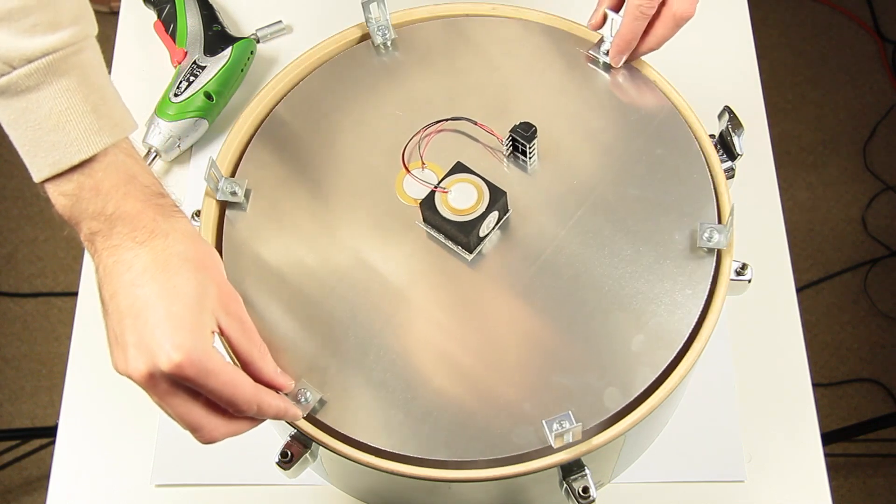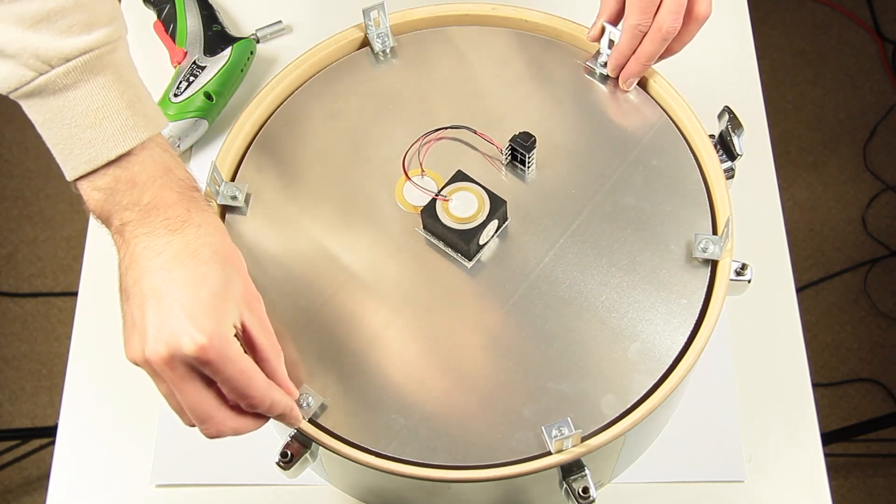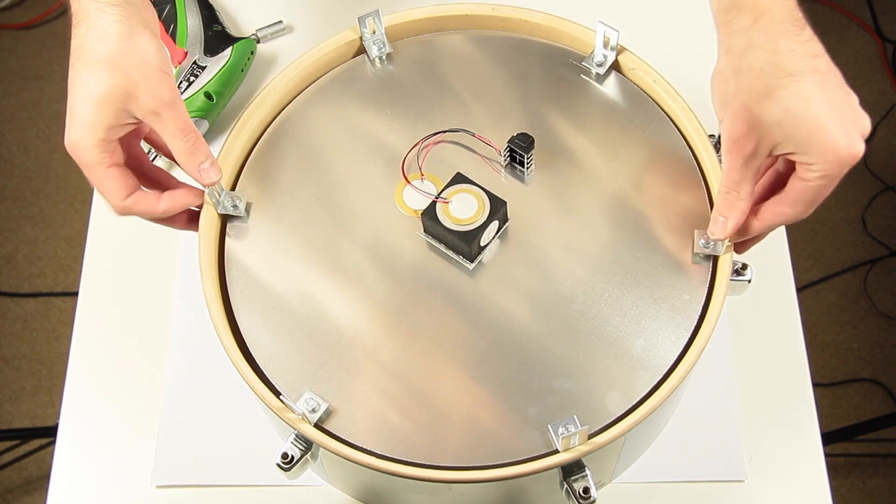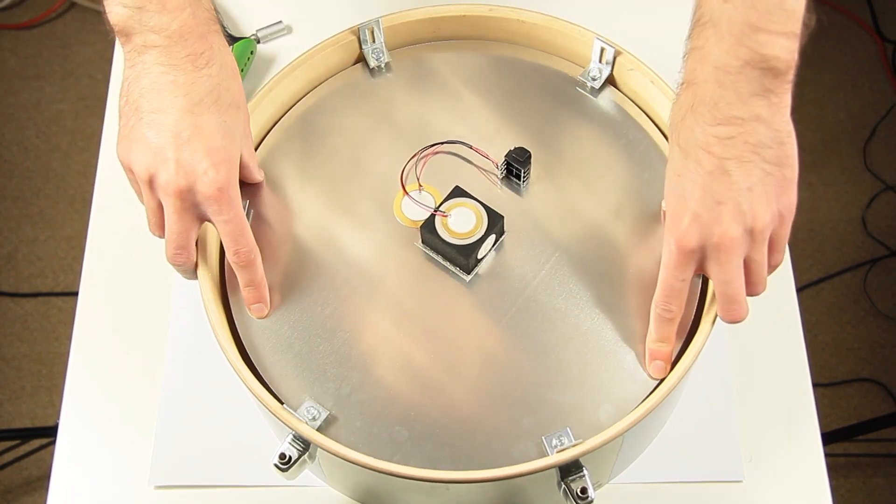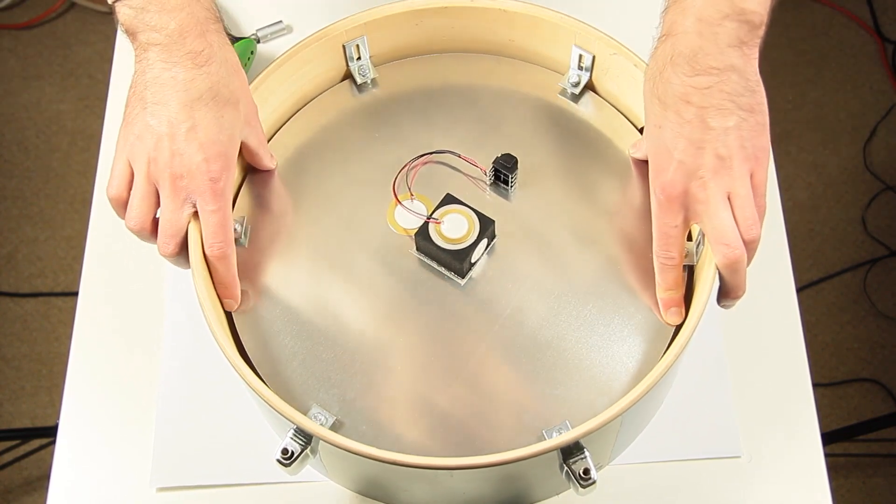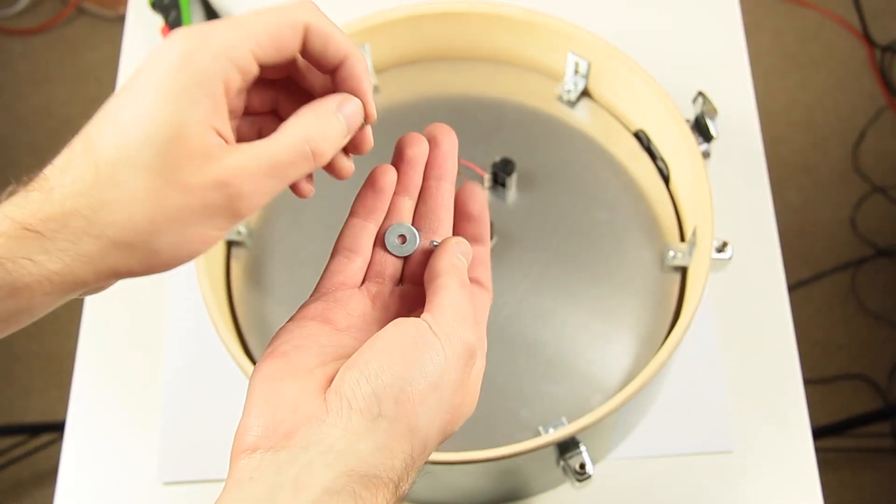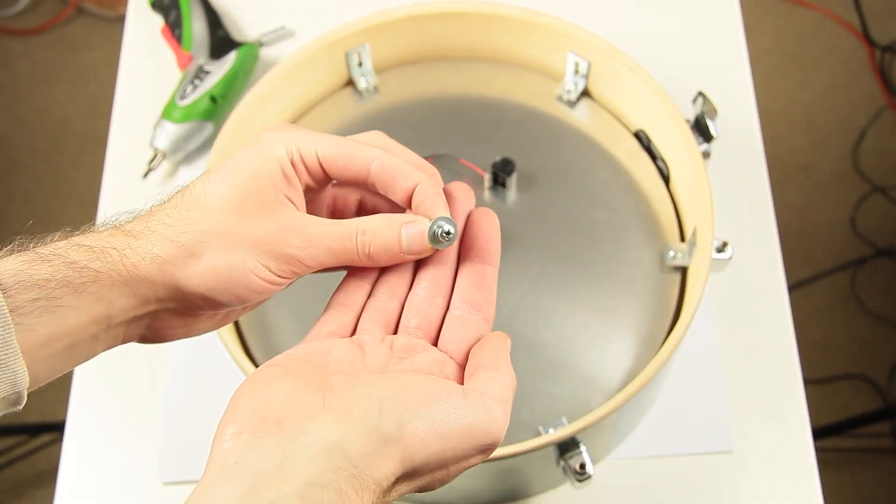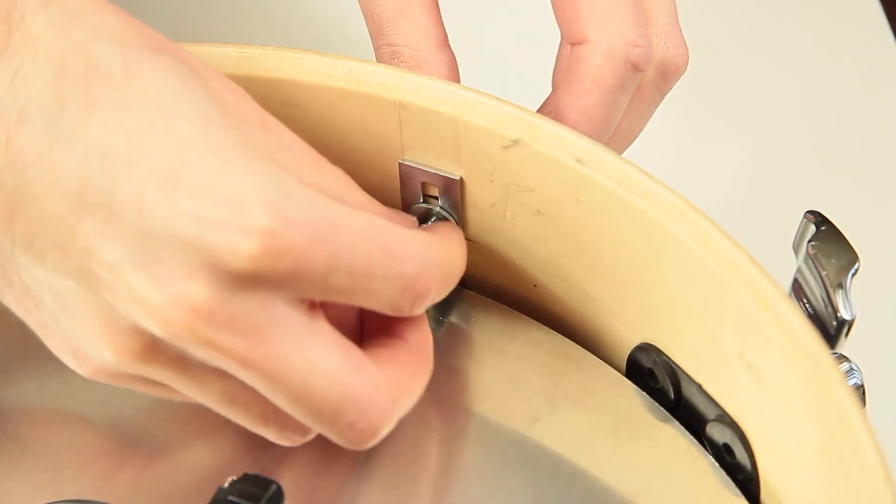Now we can finally install the trigger system. It is really tight which means we worked accurately. The M4 screws need lock washer and big washer. We screw them but won't tighten them yet.